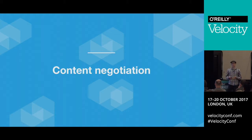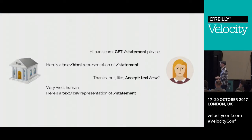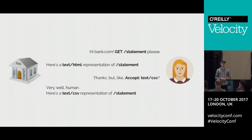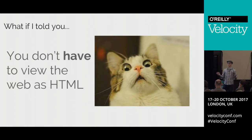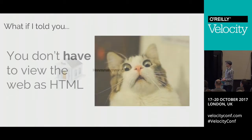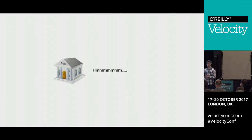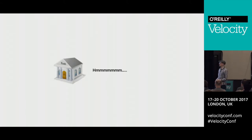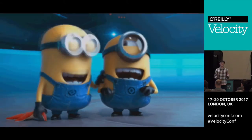Content negotiation is, in principle, a really amazing idea. You could talk to your bank and say, 'I'd like my statement please,' and the bank would, by default, give you your statement as a web page. But what if you could send an extra header saying, 'Actually, I'd like that statement as a spreadsheet'? And on the same URL, you get the same data but in a different format. We can browse the web in any format we like.